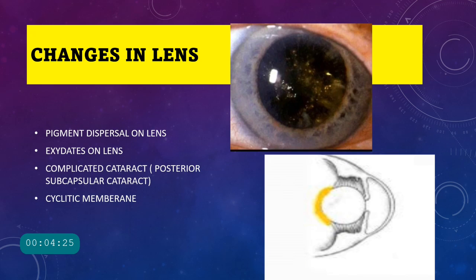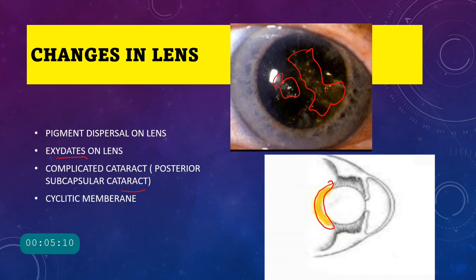Changes in the lens include pigment deposition from the iris, exudates on the lens, and formation of complicated cataract — most commonly posterior subcapsular cataract — with a breadcrumb appearance also called polychromatic luster, typical of lens changes in uveitis. In chronic cases, exudate forming on the posterior part of the lens is specifically seen in cyclitis, and this membrane is called a cyclitic membrane.